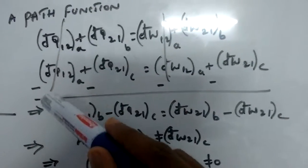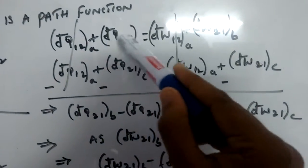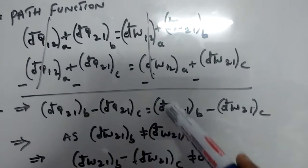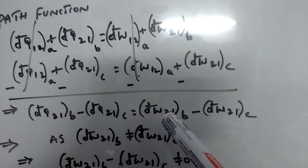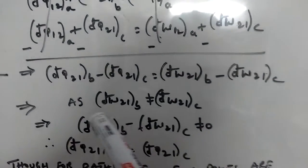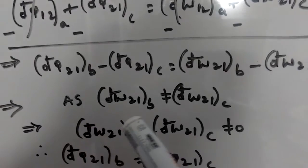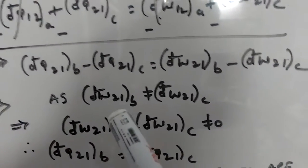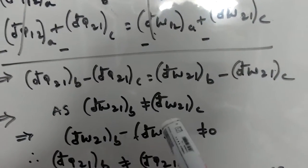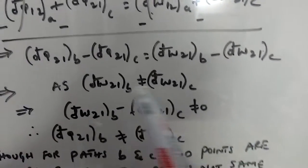The heat transfer and work transfer terms for path A cancel with each other from both equations. Finally we get: dQ₂₁(B) minus dQ₂₁(C) equals dW₂₁(B) minus dW₂₁(C). In an earlier video we discussed that work transfer is a path function — it is not a property and not a point function. Therefore, dW₂₁(B) is not equal to dW₂₁(C).